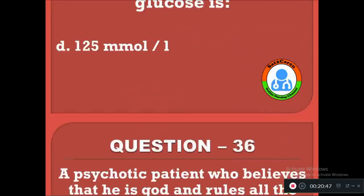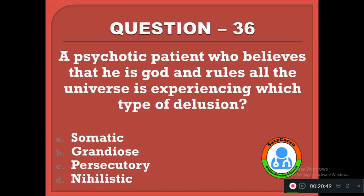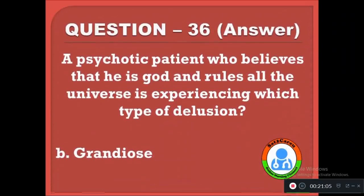Question 36: A psychotic patient who believes that he is God and rules all the universe is experiencing which type of delusion? Option A: somatic, B: grandiose, C: persecutory, D: nihilistic. The correct answer is B, grandiose delusion.